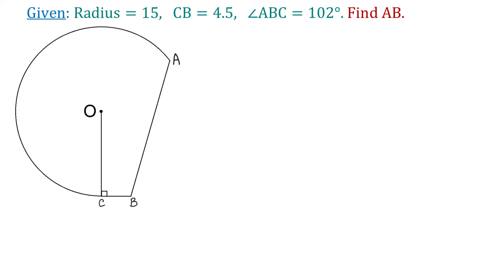In this figure, we have a part of a circle that has a radius of 15 units. At point C, the radius is perpendicular to the line segment CB, which has a length of 4.5 units. The angle ABC measures 102 degrees, and we need to find the length AB.